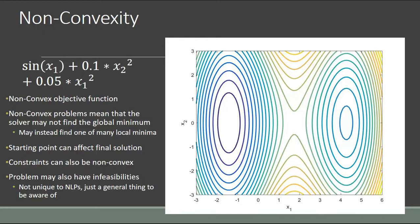One other thing to keep in mind is that the problem may have infeasibilities. Your solver may not be able to find a feasible point — this isn't unique to nonlinear programming; you could find it in linear programming or quadratic programming. It may be user error where you've over-specified your problem: if you have only three variables and ten equations, it's impossible to satisfy ten equations with only three variables because the problem is over-specified. You don't have enough degrees of freedom to satisfy all the constraints.